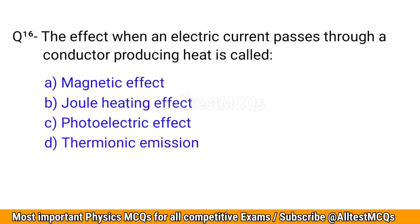Q16. The effect when an electric current passes through a conductor producing heat is called? The correct option is B: Joule heating effect.